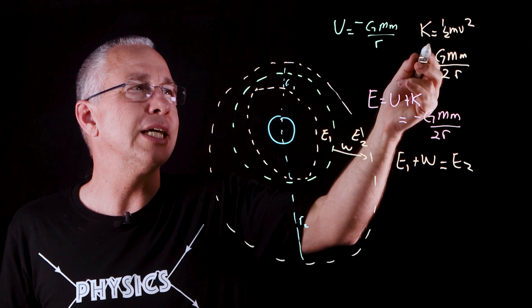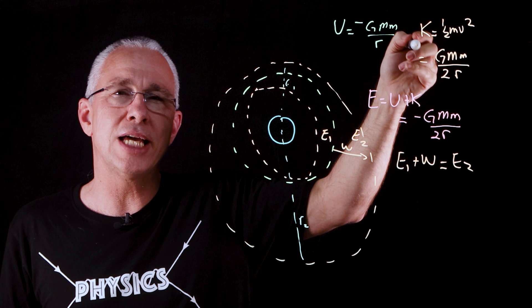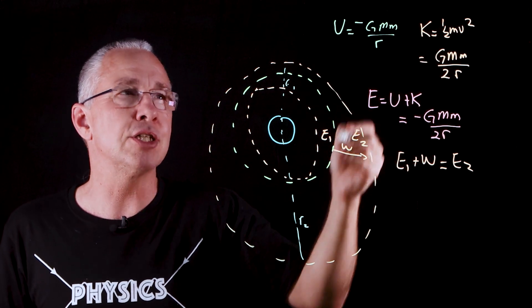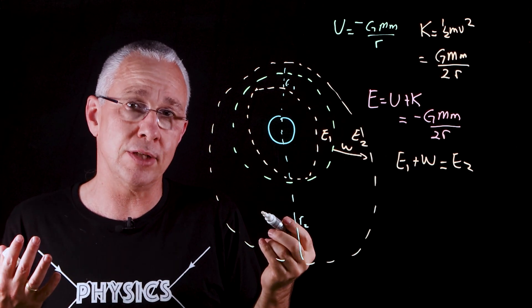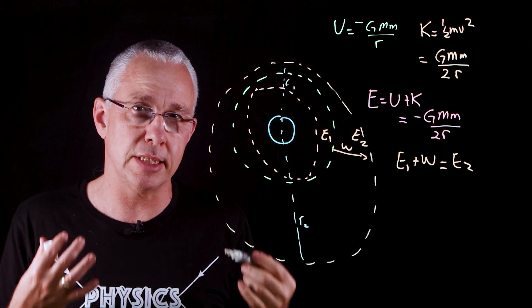What happens? Well, the kinetic energy, as you can see, as we go to a larger orbit, then the kinetic energy actually decreases. And so we have an increase in potential energy, resulting in a decrease in kinetic energy, but the total energy remains the same.